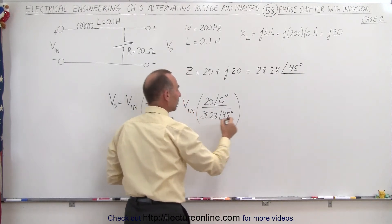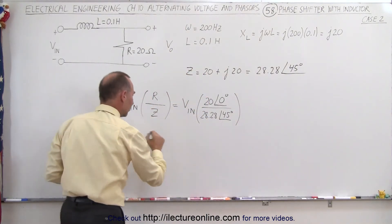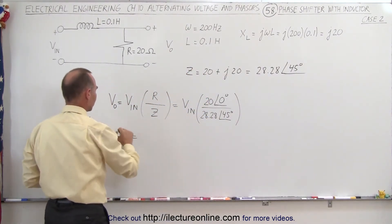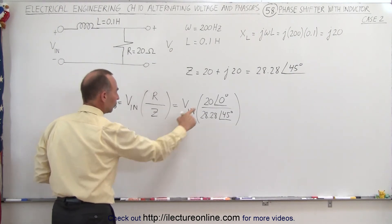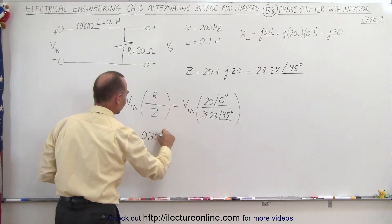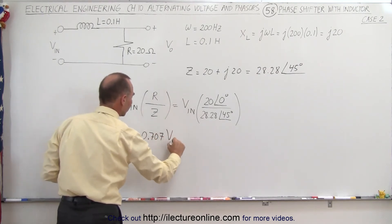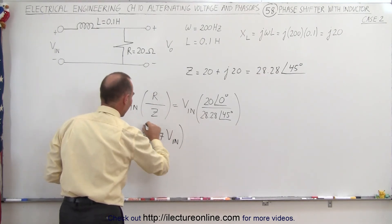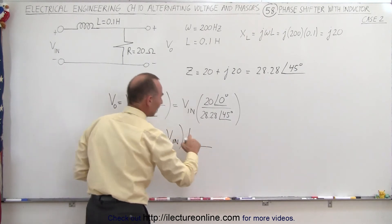Now the magnitude will be the same as before, so we can go ahead and write that over here. You can see that the output voltage V out is equal to, this divided into that is 0.707 times the input voltage with a phase angle of, and now here's the difference...